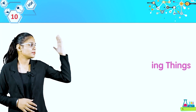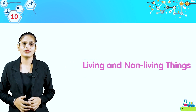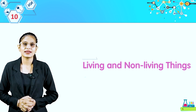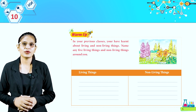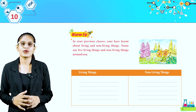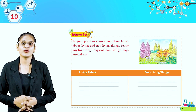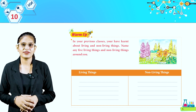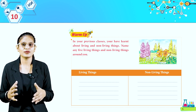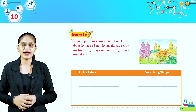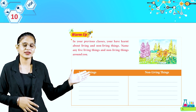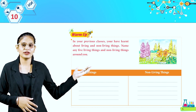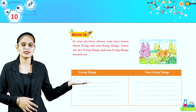Welcome to the class, students. Today we are going to discuss Chapter 10: Living and Non-Living Things. Let's warm up. In your previous classes you have learnt about living and non-living things. Name five living things and non-living things around you. You can write it by yourself. Write living things and non-living things in this chart.